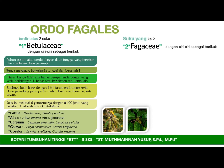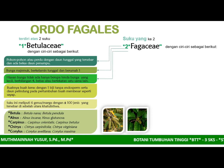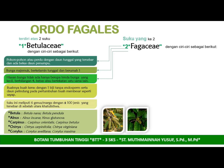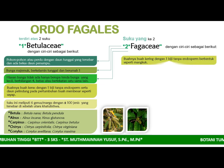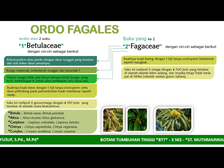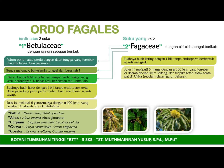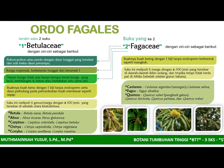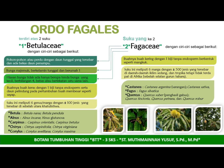Suku yang kedua dari Ordo Fagales adalah suku Fagaceae. Ciri-cirinya secara umum hampir sama atau sama persis dengan famili sebelumnya yaitu Betulaceae, namun yang membedakannya adalah buahnya. Buah termasuk buah kering dengan satu biji tanpa endosperm, berbentuk seperti mangkuk. Suku ini terdapat 6 marga dengan kurang lebih 500 jenis yang tersebar di daerah iklim sedang, tetapi tidak terdapat di Afrika. Marga tersebut di antaranya adalah Castanea, Quercus, dan Fagus.